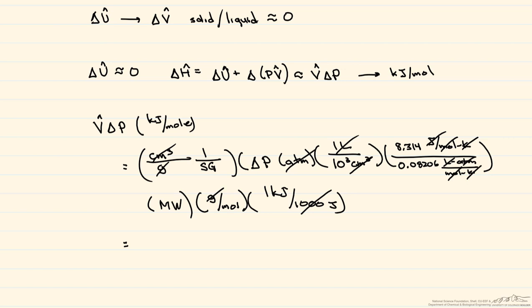So this is going to be equal, in kilojoules per mole, to 1.013 times 10 to the minus fourth, times the molecular weight, times delta P, divided by the specific gravity.